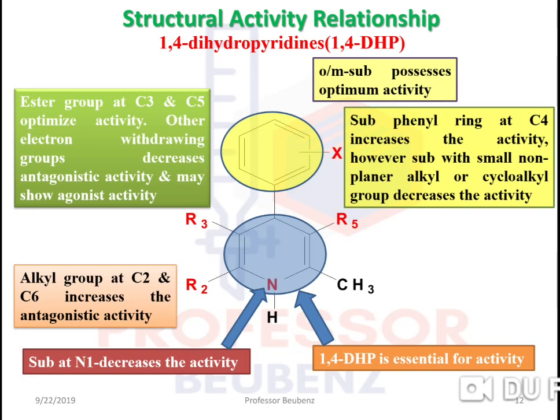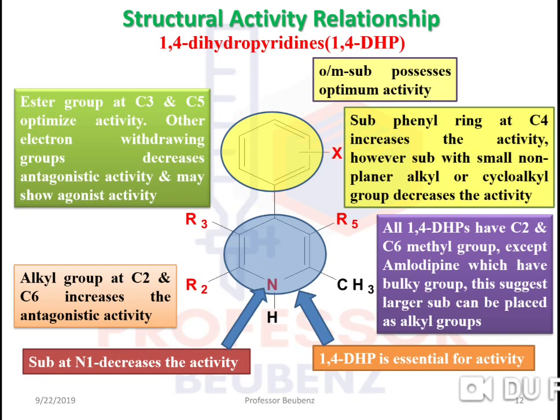Alkyl groups at C2 and C6 increase antagonistic activity. In the structure, methyl groups are at positions 2 and 6 (numbered from R2). All 1,4-dihydropyridines have C2 and C6 methyl groups except amlodipine, which has bulky groups. This suggests larger groups can be placed as alkyl groups. This completes the SAR of 1,4-dihydropyridines.